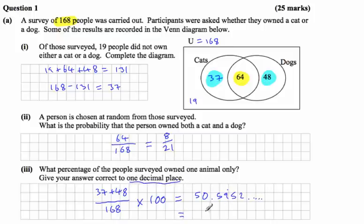So that would be 50 point—we look at the second number after the decimal and that knocks the 5 up to 6. So it's 50.6, and that was a percentage. And that's the end of Part A.